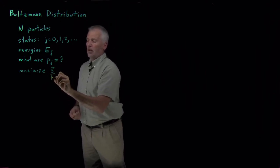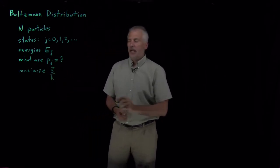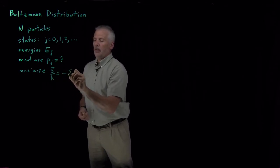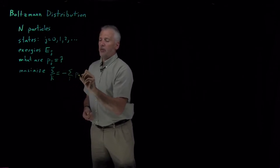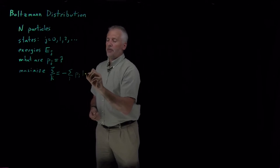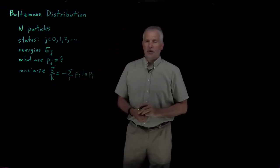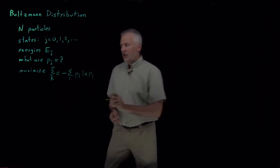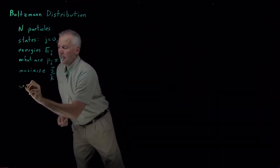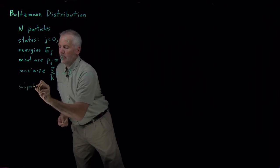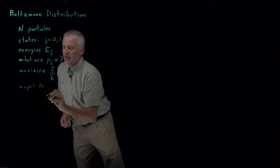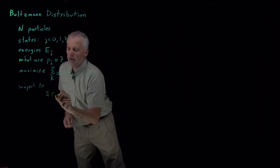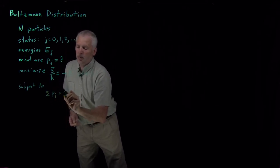Or if we prefer, the entropy divided by k, just to keep the algebra a little simpler. We know how to calculate that entropy from the probabilities — it's the sum of the p_i log p_i terms. But we want to maximize that entropy not just on its own, but with some constraints. The first constraint is we need the probabilities to sum to 1.